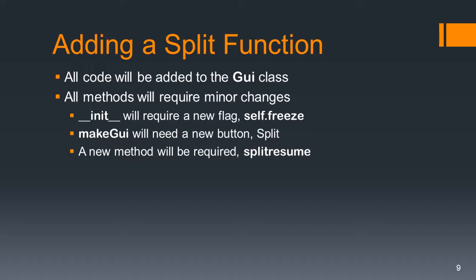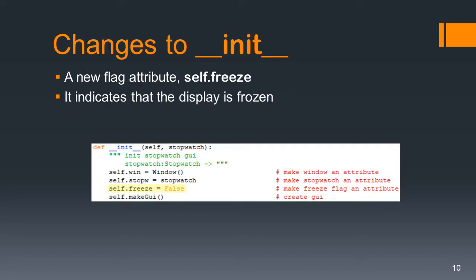Init is going to require a new flag, which we will call self.freeze. Make GUI will need a new button, which we're going to label split. And a new method will be required, which we're going to call split_resume. The change to init is just one line: self.freeze equals False. This will indicate whether or not the display is frozen. Since when we first start up everything is not frozen, that's why it will be equal to False.